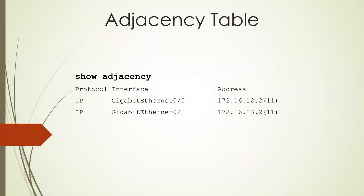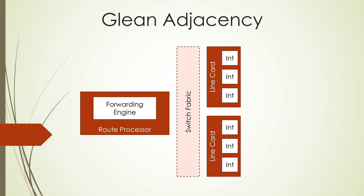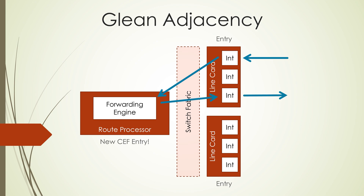We can see the contents of this table with the show adjacency command. So when a packet comes in, a CEF lookup is performed. If there is no entry yet for this packet, this is called a Glean adjacency, where the packet is punted to the CPU and the resulting information is then used to create a new CEF entry.